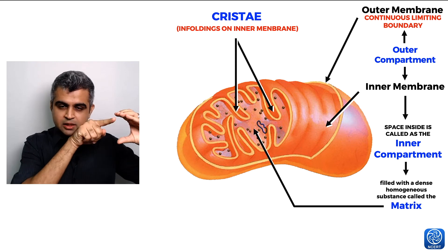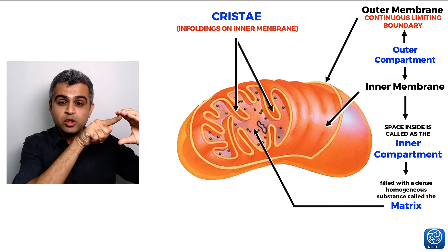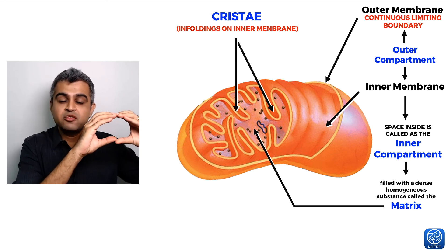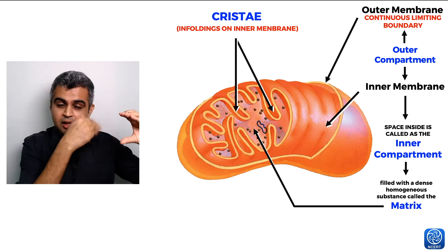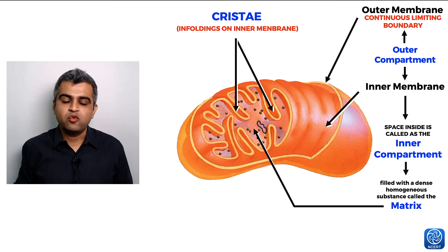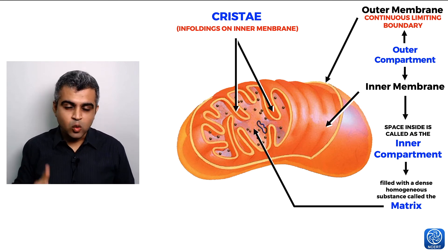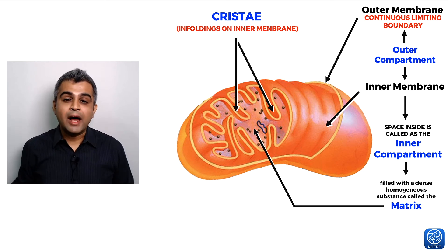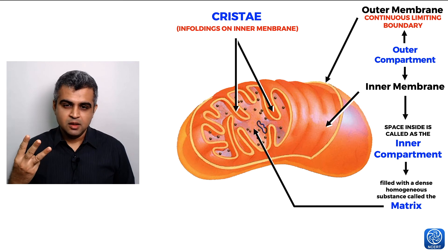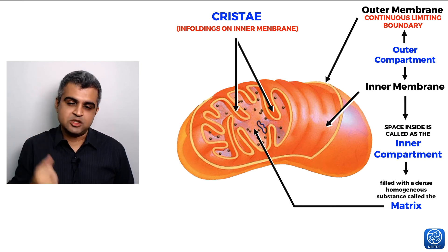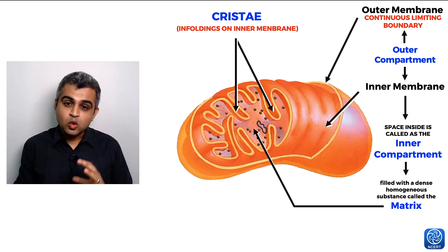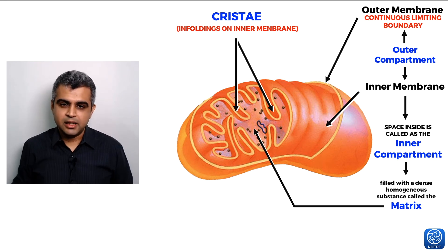For a mitochondria of a given size, if the inner membrane is continuous there would be X surface area, but with multiple foldings it can have 10X surface area — same volume, more surface area through folding. So why do you have foldings? Only one reason: to increase surface area. Why increase surface area? One of three reasons: increase absorption, increase secretion, or increase attachment. In the mitochondria, what is happening here will be revealed in the next five minutes.